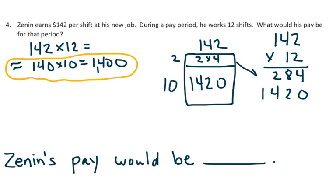Notice that these match. I'm adding these together, adding my partial products. And I have an answer of 1,704, which is pretty close to 1,400. So that is my answer here. So Zenon's pay would be $1,704 for that pay period.